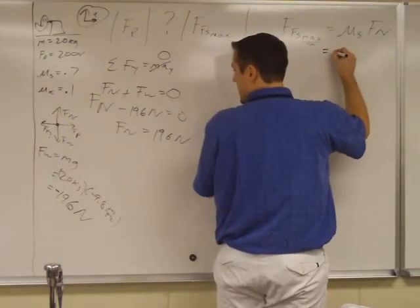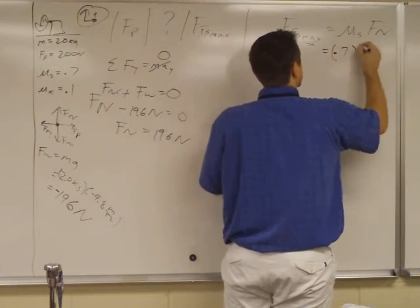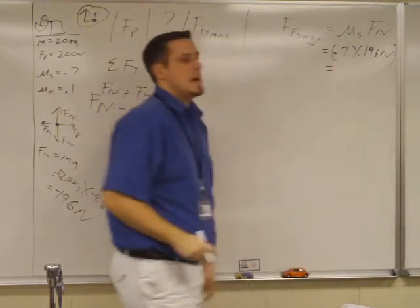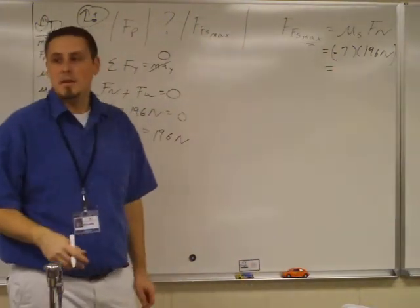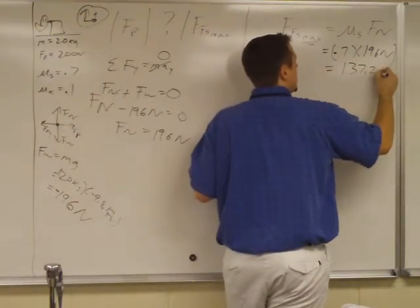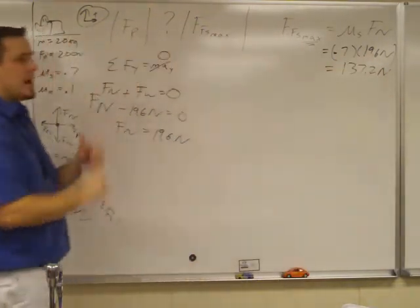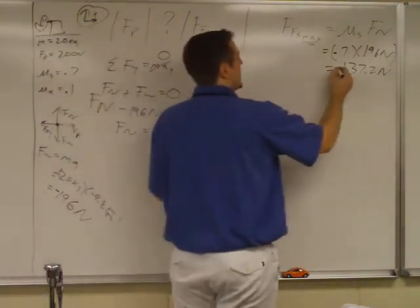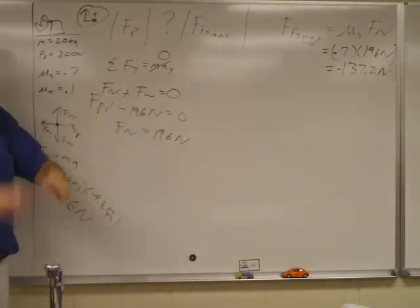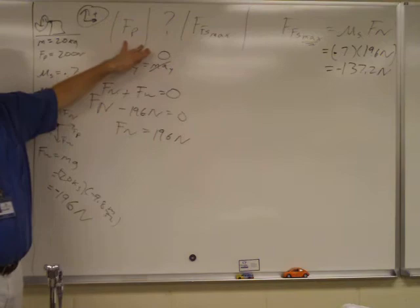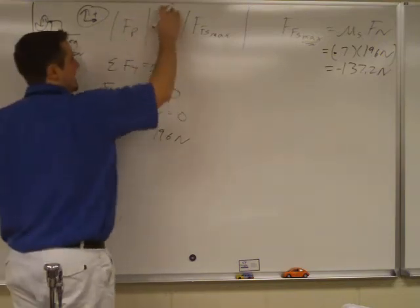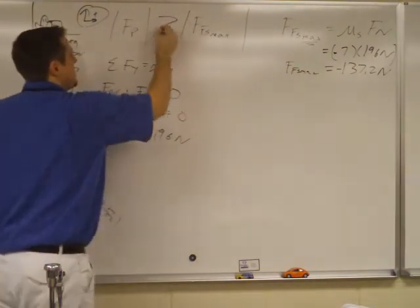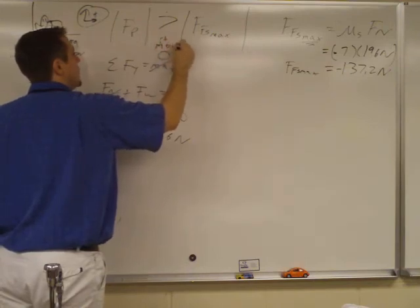Normal force is 196 newtons. Can I calculate this now? Yes. So let's do that. Mu sub s is 0.7 times 196 newtons. That's definitely less than 200, so it's going to move. But what is that? 0.7 times 196. 137.2. Now remember, when I go into here, there's no signs. When I come out of there, there's signs. So technically, static max would go to the left. If you want, you could put a negative on there. But in this case, we're taking the absolute value anyway. So we have these two values. Which one's bigger? Force of the push. Therefore, it moves.